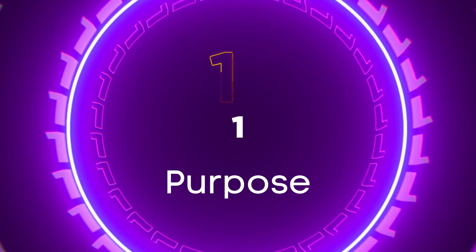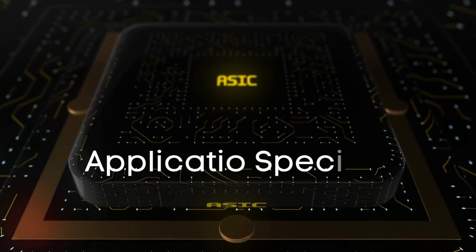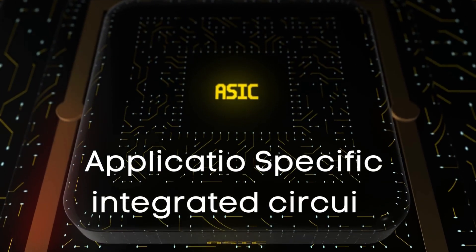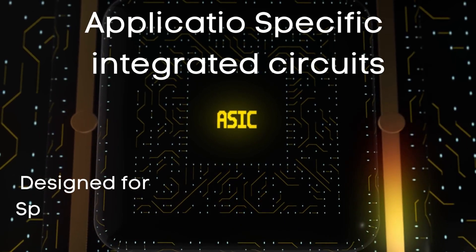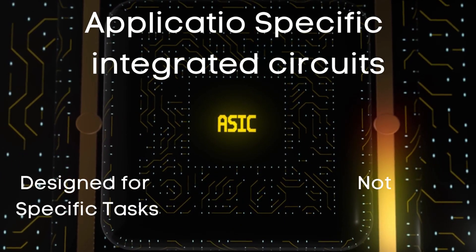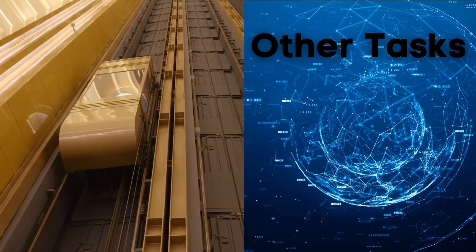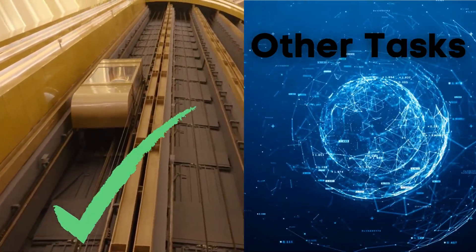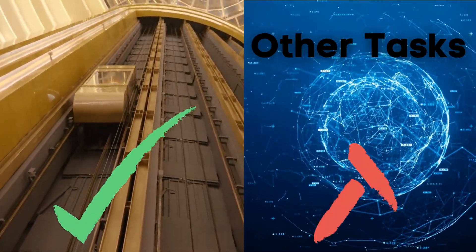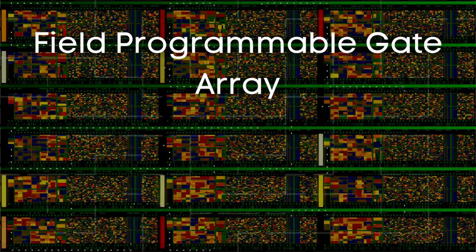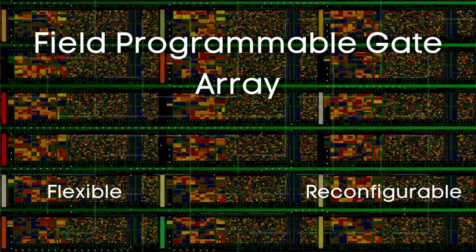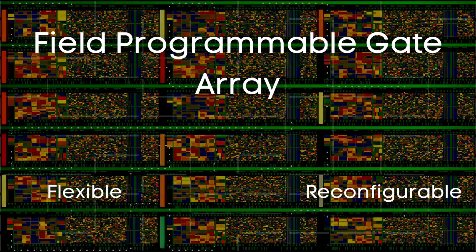First, we will discuss Purpose. ASIC stands for Application Specific Integrated Circuits. These are designed for specific tasks and are not reconfigurable. For example, an ASIC designed for a lift controller cannot be configured to do any other task. FPGA stands for Field Programmable Gate Arrays. They are highly flexible and can be reconfigured to adapt to changing needs.